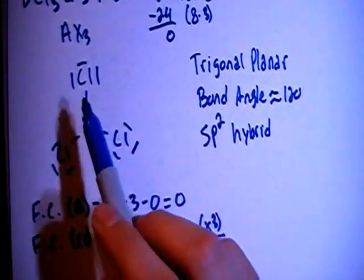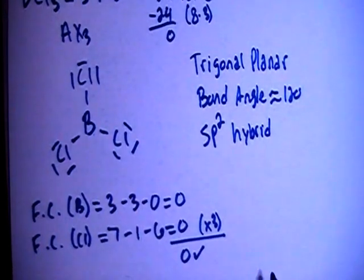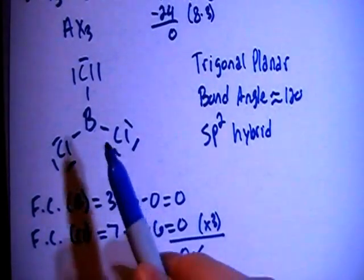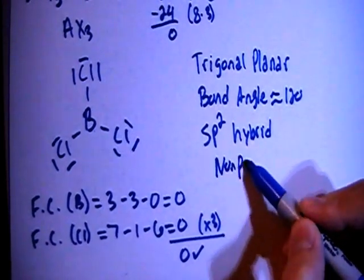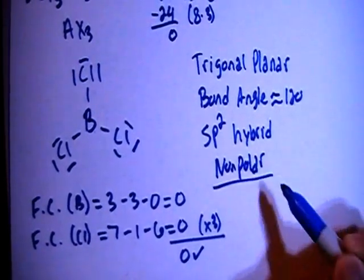And because in this case there's all three chlorines surrounding, they're all the same atom, their separate dipole moments will cancel each other out, making this a non-polar compound.